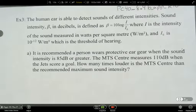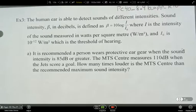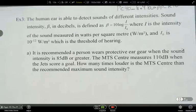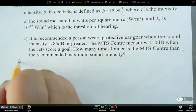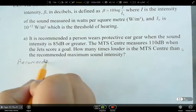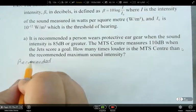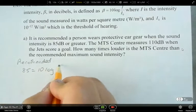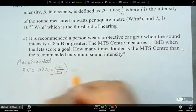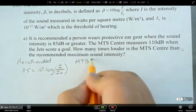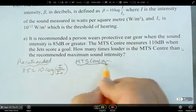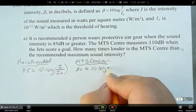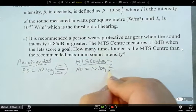Okay, so this is where we're going to be doing a comparison, and we're comparing it against the recommended maximum. So we're going to look for which one is stronger. So here, the recommended is 85 equals 10 log i over i-naught. The MTS center is 110, 10 log i over i-naught.